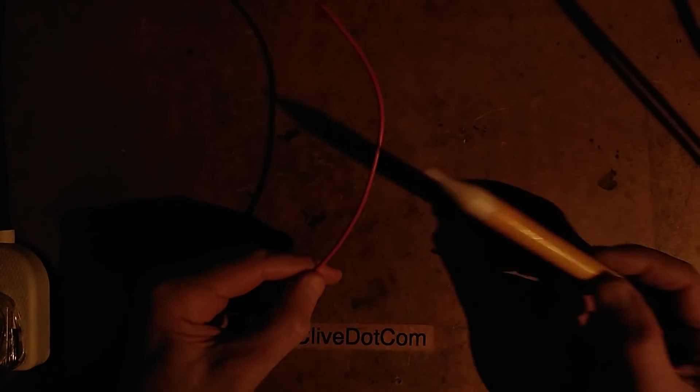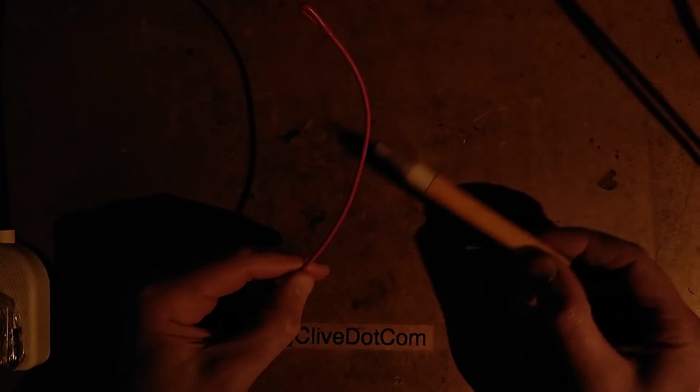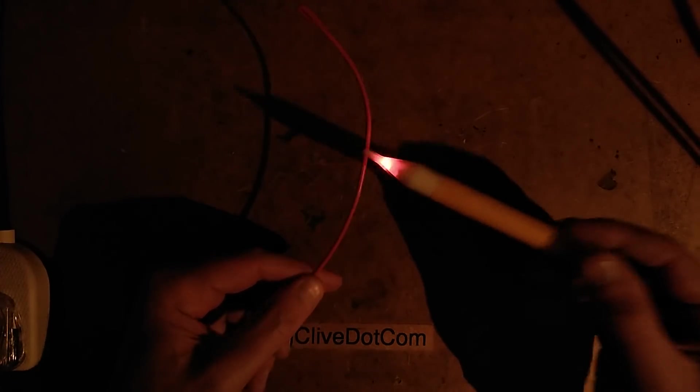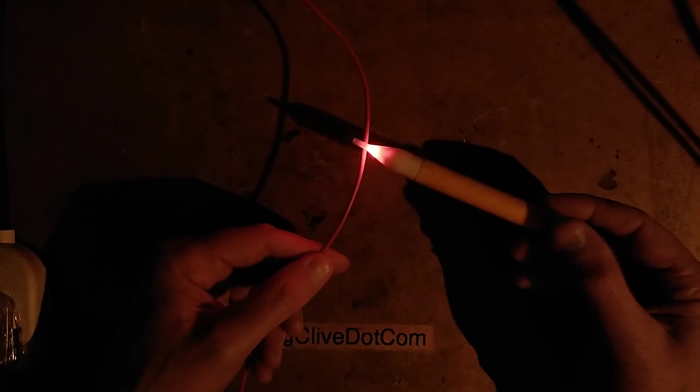When you put it up, it pulses at 50 or in the case of America 60 Hertz. It's quite good in the sense that you don't need to break the wire to actually test if there's a presence of voltage on that wire.